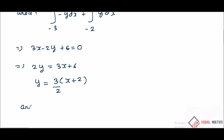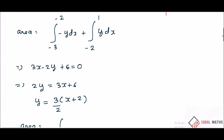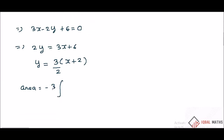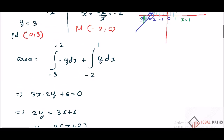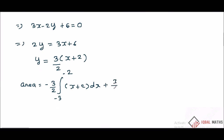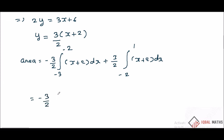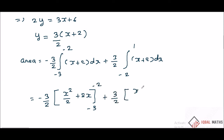Area equal to integration. Minus value: minus 3 by 2, limit from minus 3 to minus 2, of (x plus 2) dx. Plus 3 by 2, integration from minus 2 to 1, of (x plus 2) dx. Integrating x gives x squared by 2, and integrating 2 gives 2x. Apply limits from minus 3 to minus 2, plus 3 by 2, x squared by 2 plus 2x from minus 2 to plus 1.